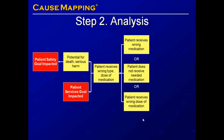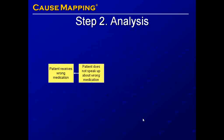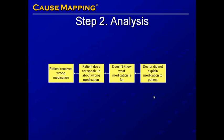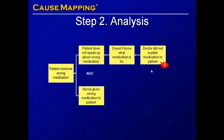We're going to add more detail to the cause of the patient receiving the wrong medication. The patient may receive the wrong medication because the patient does not speak up about it — potentially because the doctor did not explain the medication to the patient, which is an error in step 5 of the process. In addition, we have the nurse giving the wrong medication to the patient, which is an error at step 11 in the process.